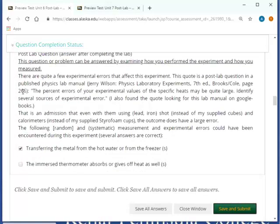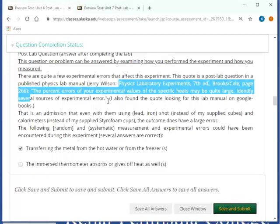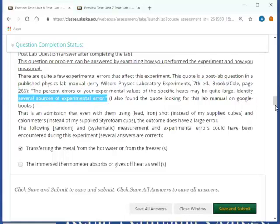I kind of call it the error lab because there are so many involved. And it's important to me to point out that when you do an experiment that there can be errors obviously. And that there are experiments out there where the errors are just abundant. And that's why you get quite inaccurate results. In fact, I'm quoting a physics lab book which says the percent errors of your experimental values of the specific heat may be quite large. Identify several sources of experimental error. And that's what I ask you to do here.